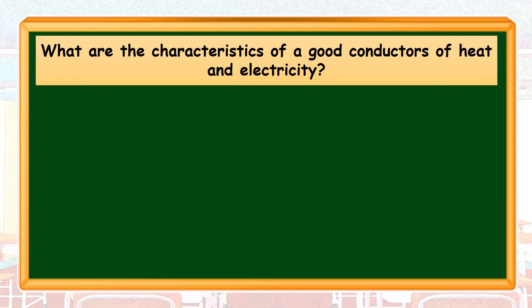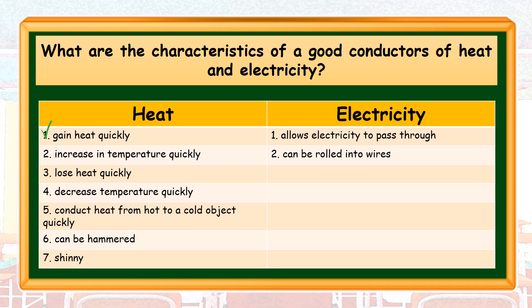What are the characteristics of good conductors of heat and electricity? We will use a table to enumerate them. Good conductors of heat can gain heat quickly, increase in temperature quickly, lose heat quickly, decrease in temperature quickly, and conduct heat from a hot to a cold object quickly. Good conductors of heat can also be hammered into different shapes.